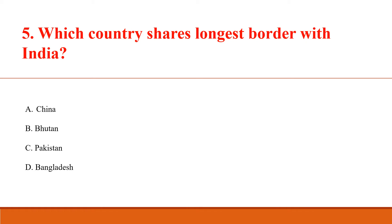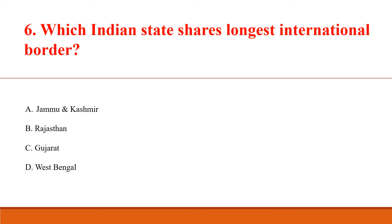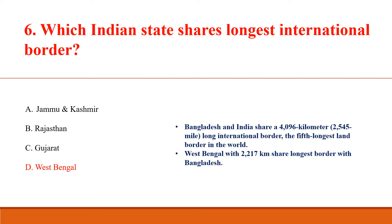Which country shares the longest border with India? Answer D: Bangladesh, 4,096 km long border. Which Indian state shares the longest international border? Answer D: West Bengal. Bangladesh and India share a 4,096 km long international border — the 5th longest land border in the world. West Bengal, with 2,217 km, shares the longest border with Bangladesh.